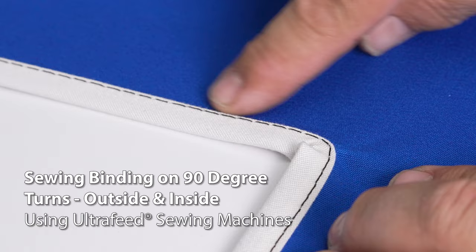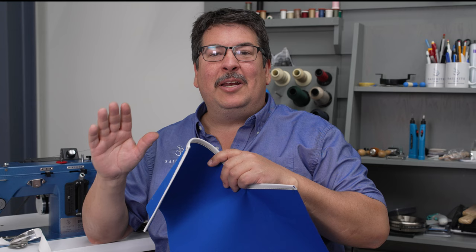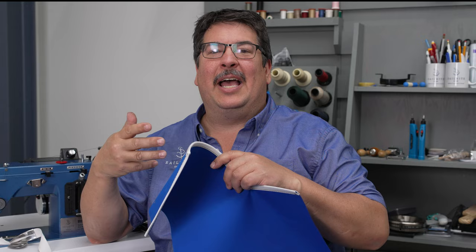without having to cut it with a hot knife, and how to go around an inside 90 degree turn. We're going to use Sunbrella Marine Grade Bias Binding for this and an Ultrafeed sewing machine, whether it be the LSZ or the LS. Let's get started.